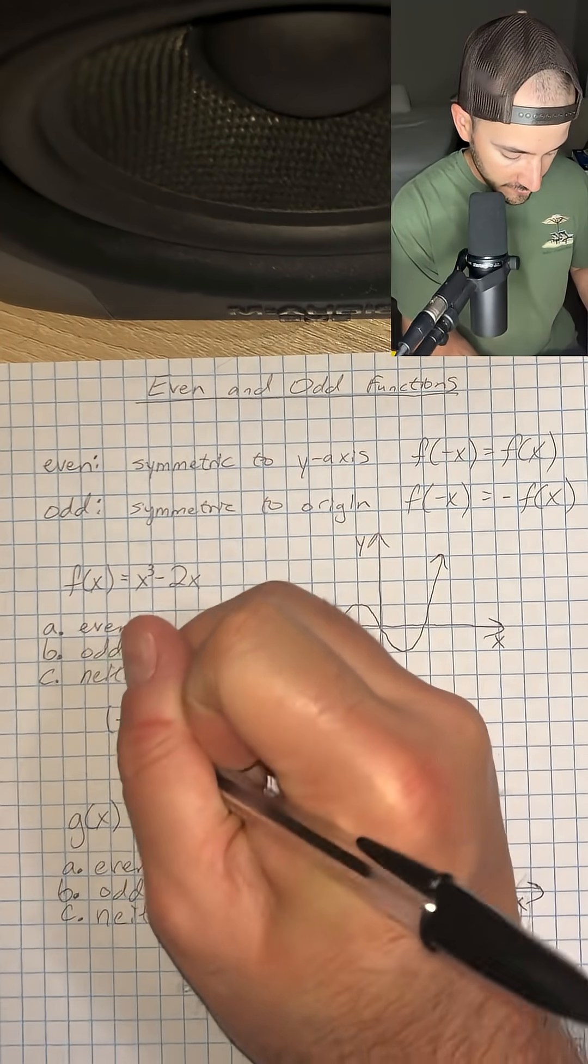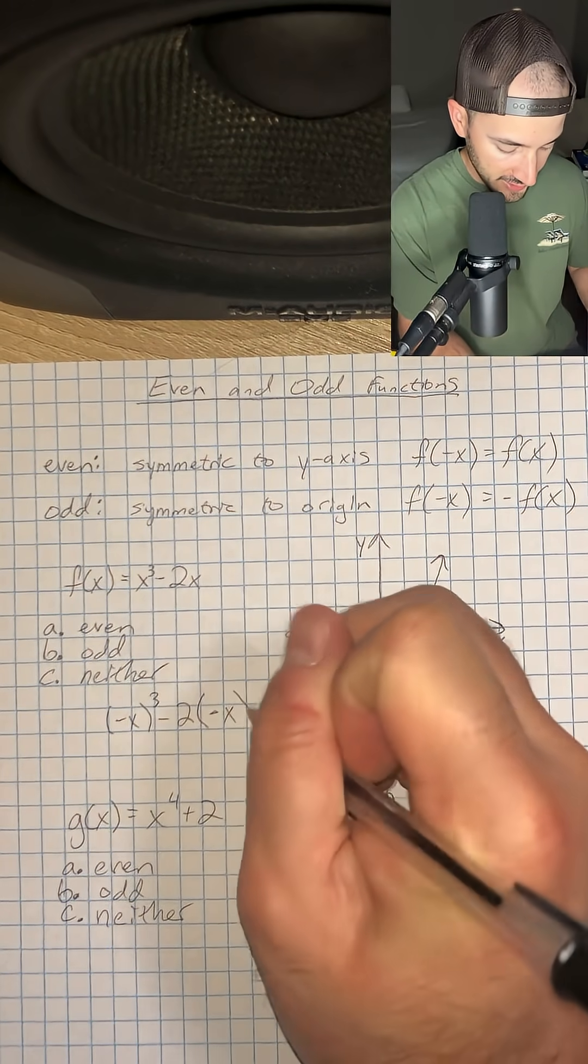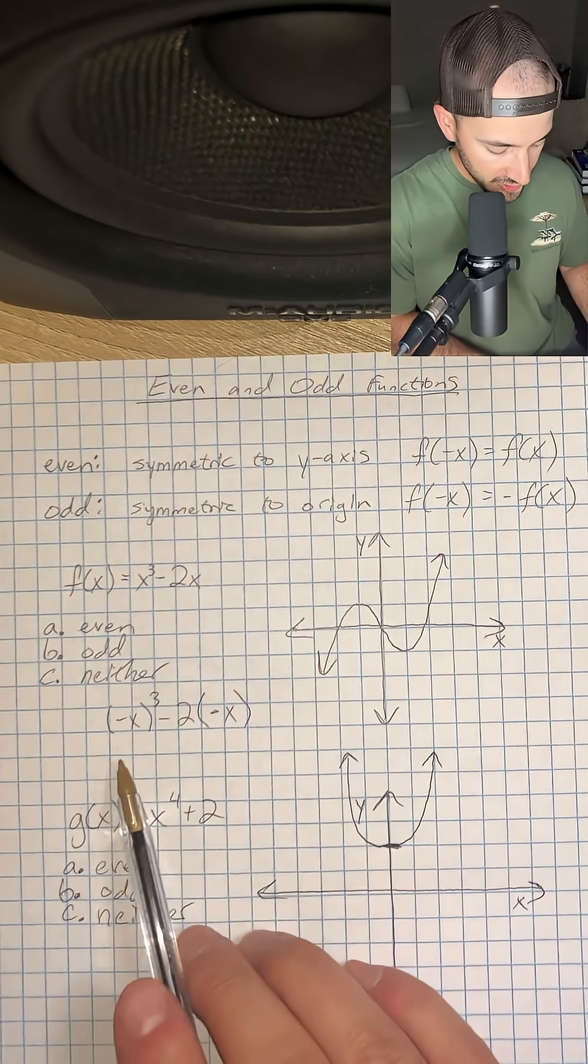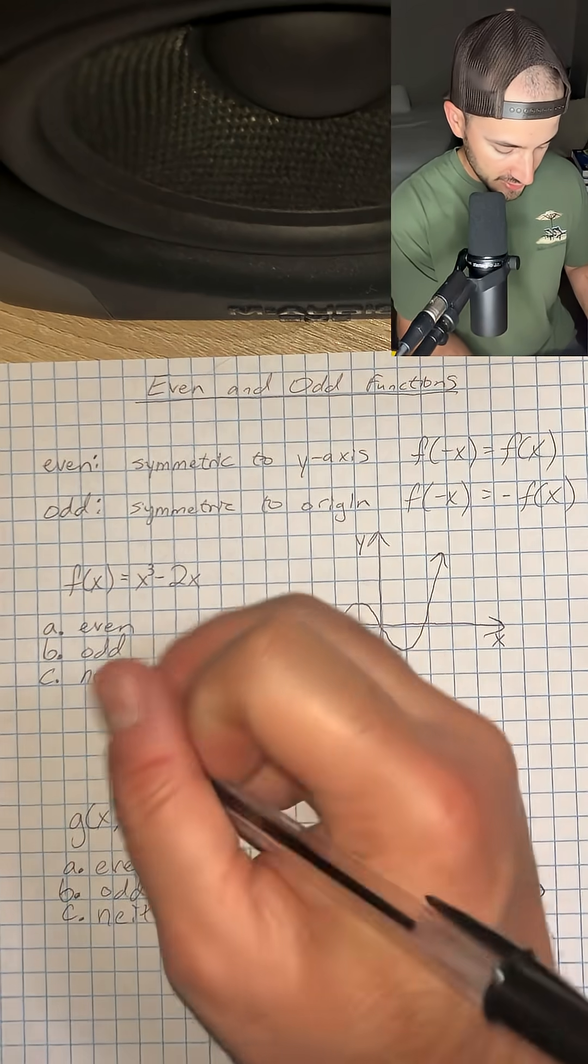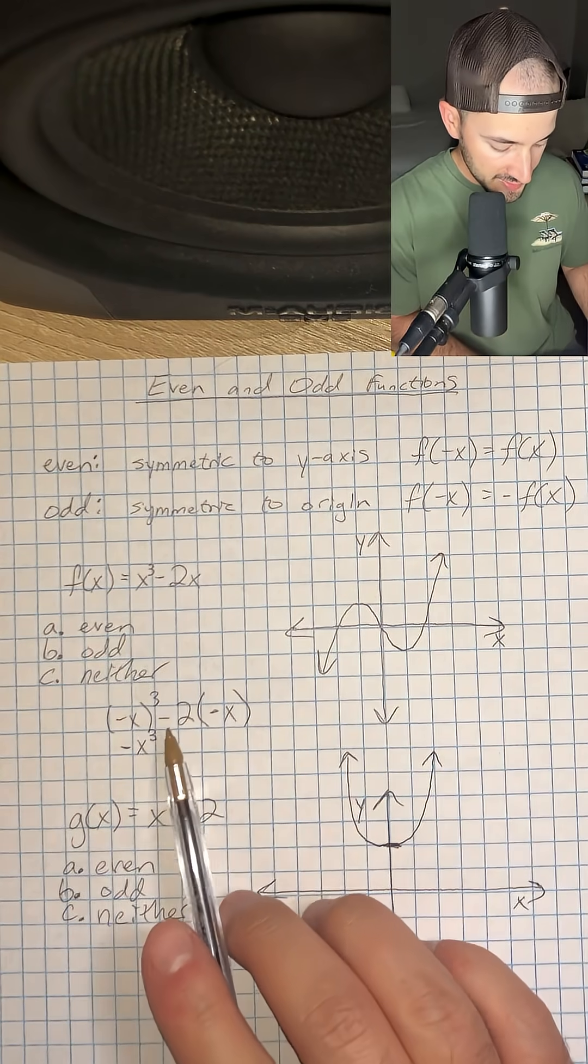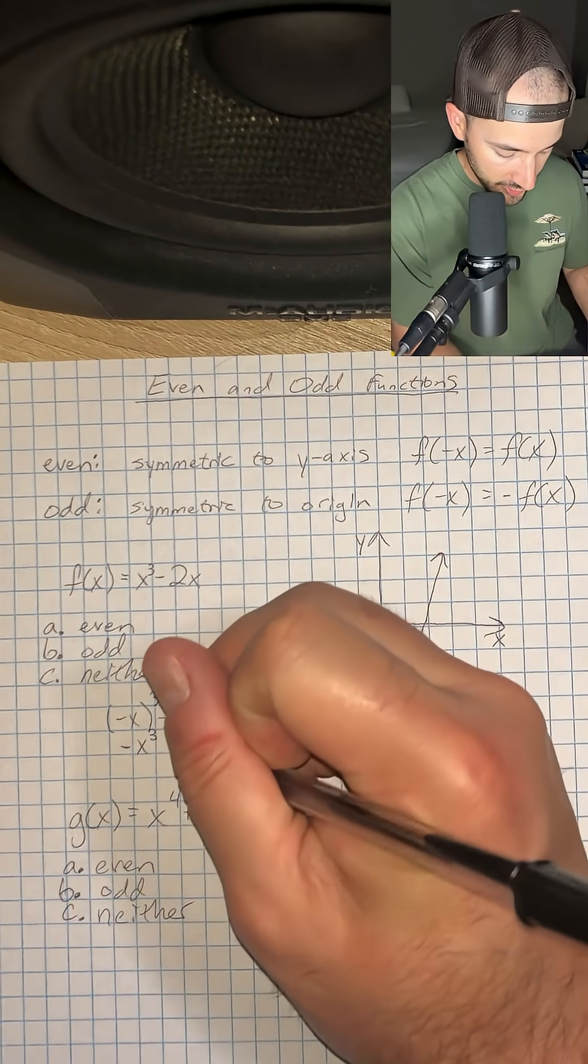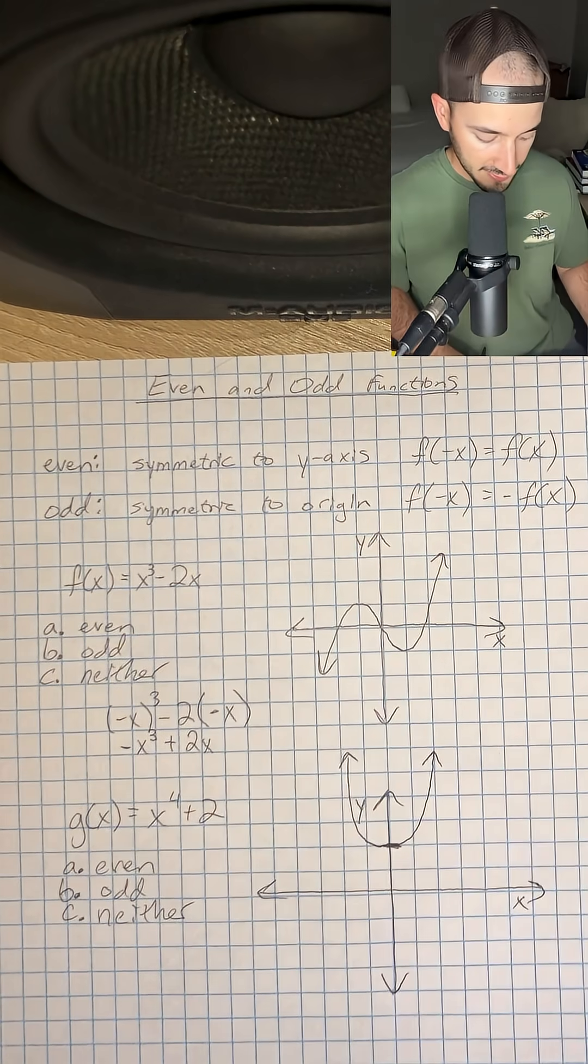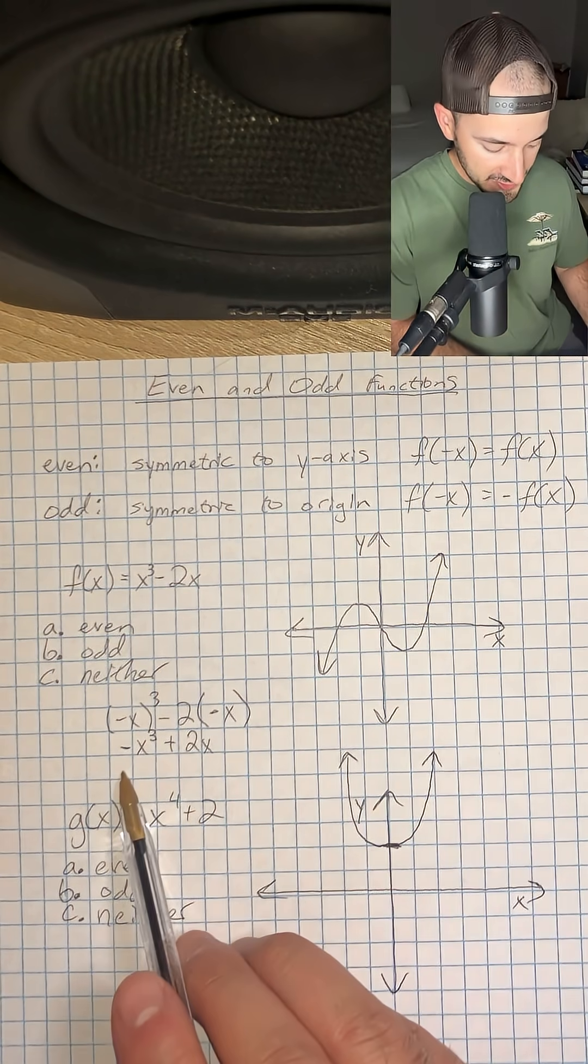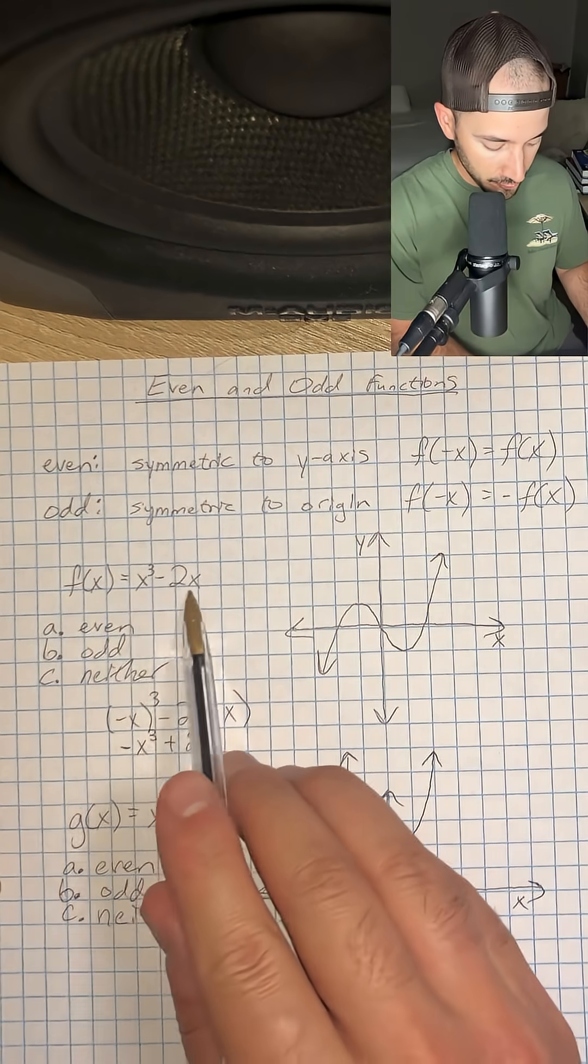We're going to have negative x cubed minus 2 times negative x. If we simplify, negative x cubed is still going to be negative x cubed, and then minus 2 times negative x. Negative times negative is positive, so that would be plus 2x. We can see that basically we have the opposite signs on both terms that we had in the original function.